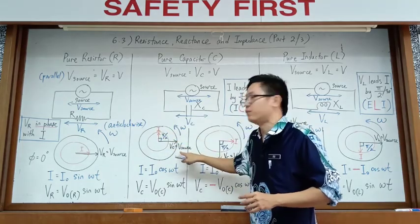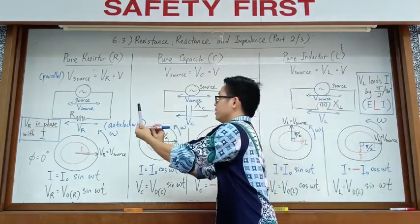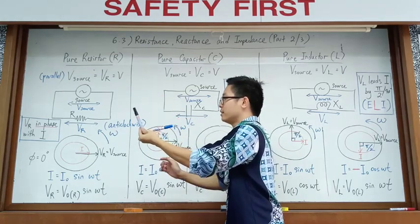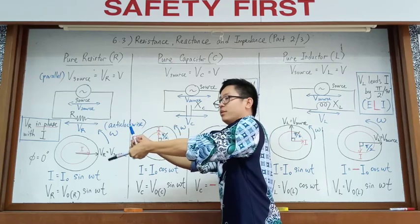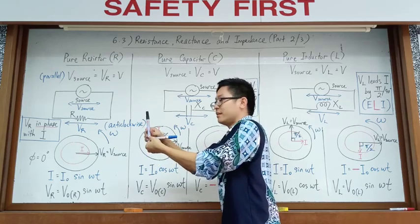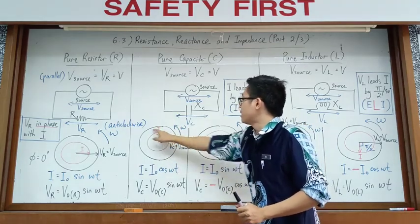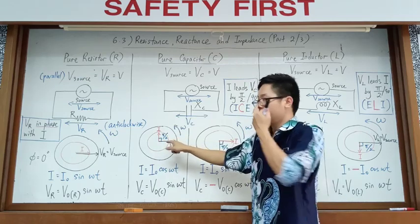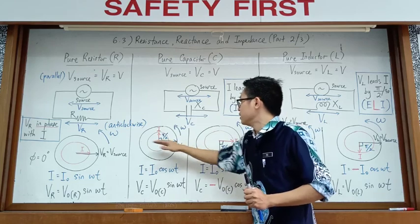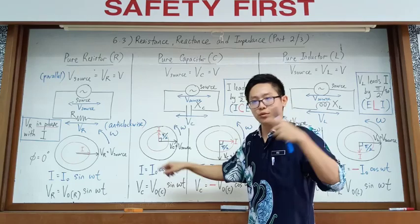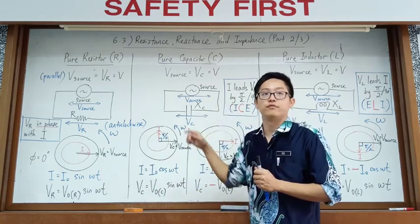Since rotation is anti-clockwise, the current leads. So if the current is at the y-axis, it is a cosine graph. Then the voltage is at the x-axis, so it is a sine graph. That means when you draw the graph of current, you draw a cosine graph. When you draw the voltage, it is a sine graph. Sometimes in another case, the current could be at the positive x-axis — sine — and the voltage at the negative y-axis, which gives a negative cosine.